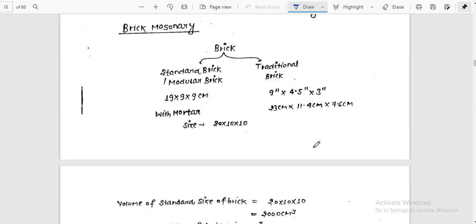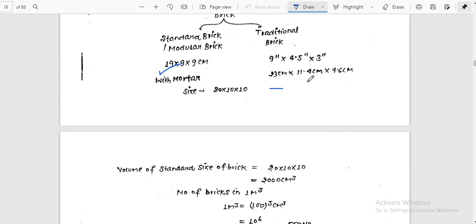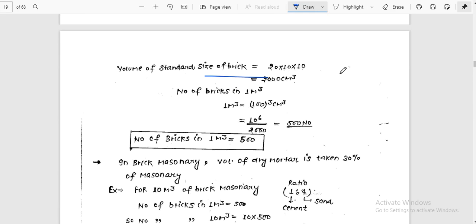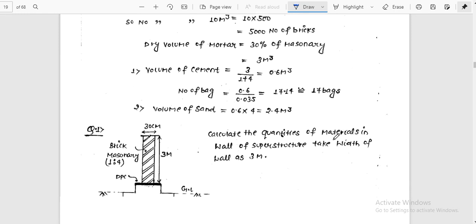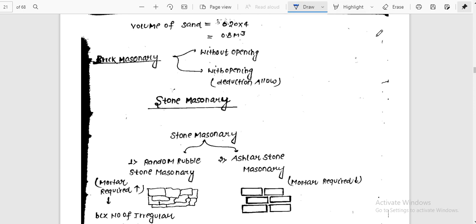Now there are basic calculations for brick masonry. The standard modular brick size is 19 by 9 by 9 cm, with mortar it becomes 20 by 10 by 10. And traditional brick is 9 inch by 4.5 inch by 3 inch, in centimeter that's 23 cm by 11.4 by 7.6. The standard size of brick is 20 by 10 by 10, but actual size is 19 by 9 by 9. After 1 cm mortar, we get the standard size.